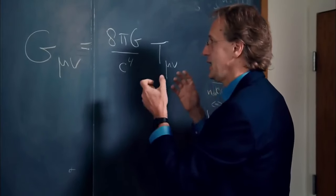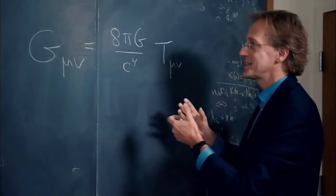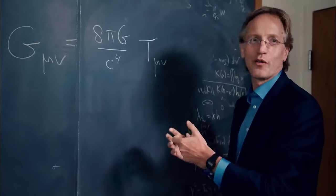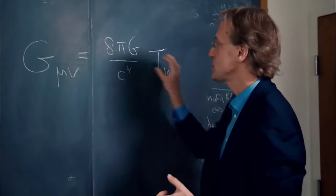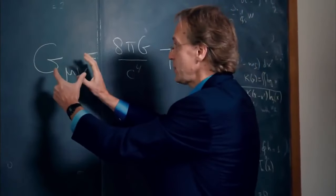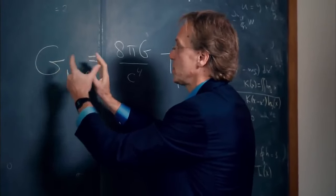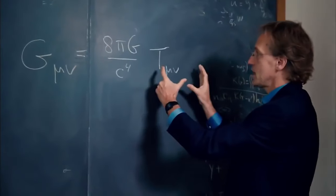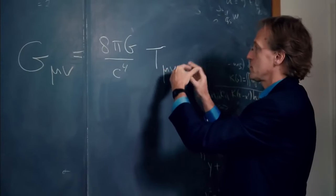It's also a signature formula for Einstein, the true mark of his genius, is that he combines two elements that actually live in different universes. The left-hand side lives in the world of geometry, of mathematics. The right-hand side lives in the world of physics, of matter and movement.